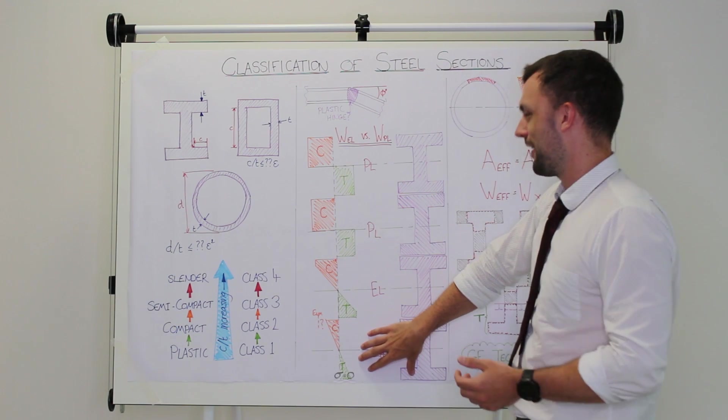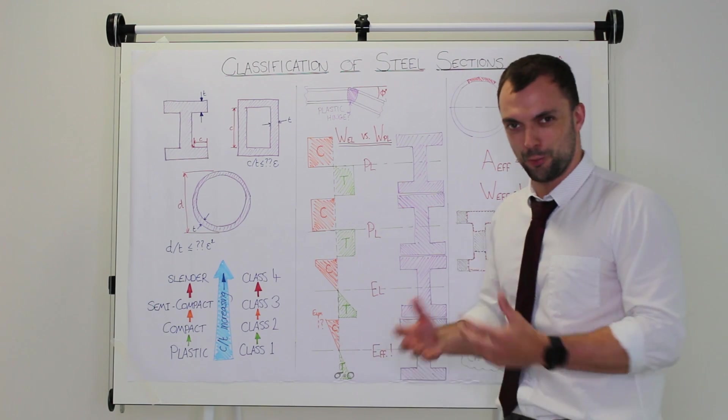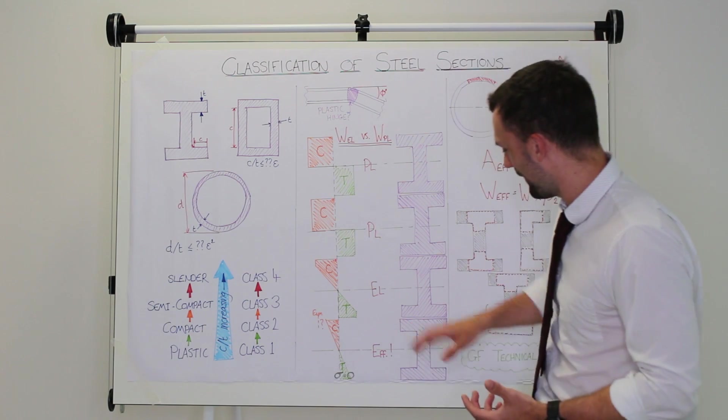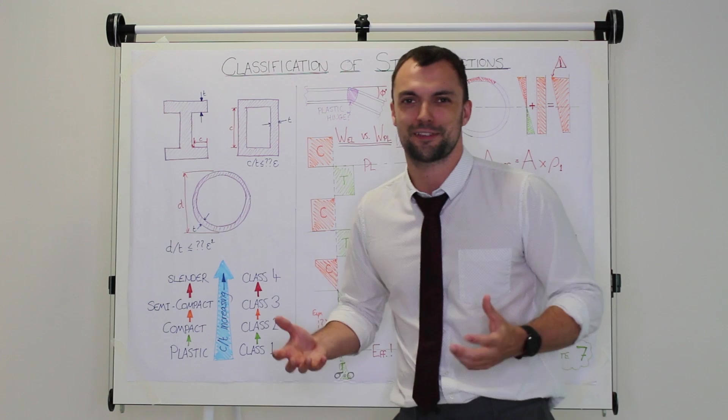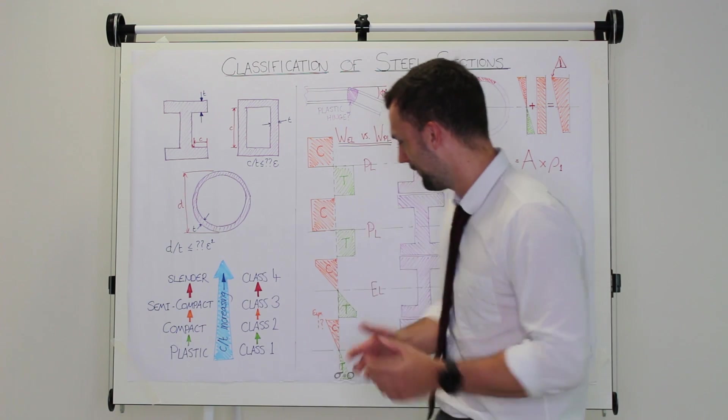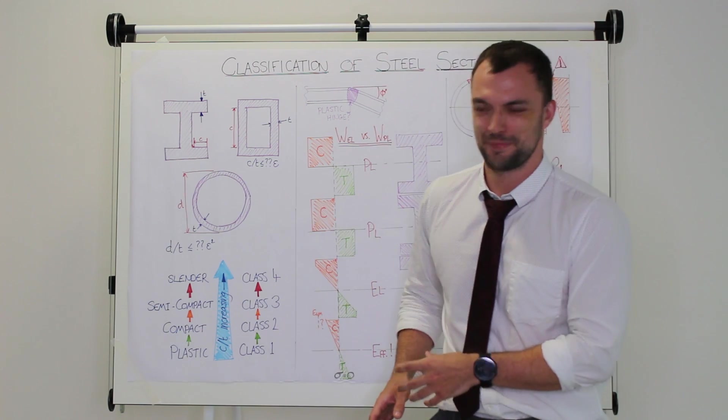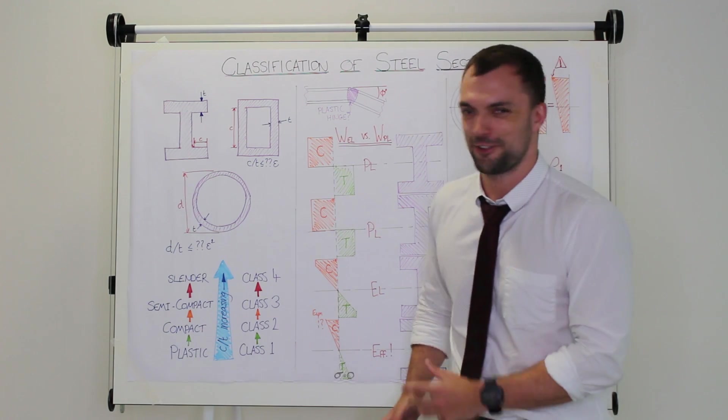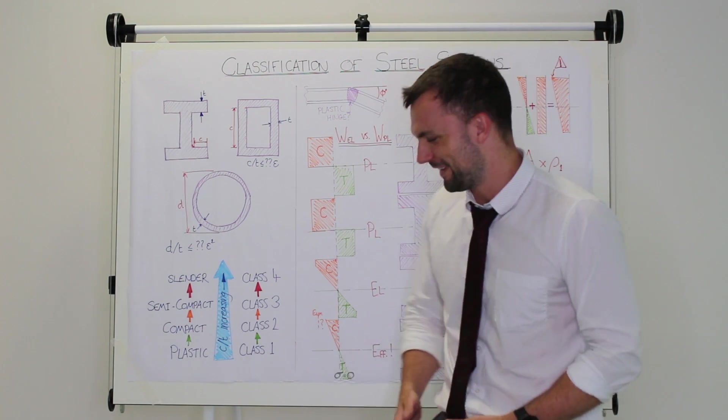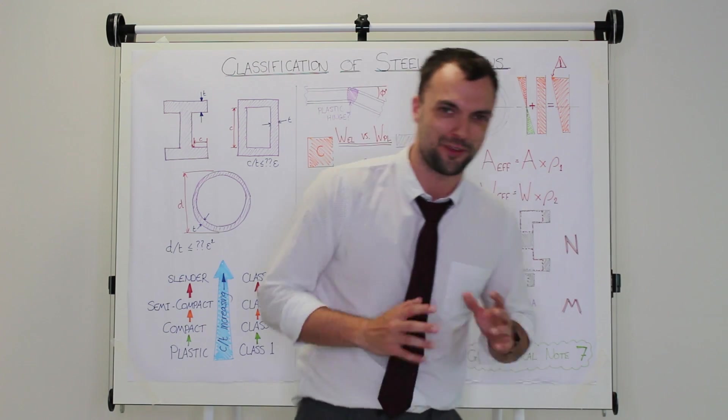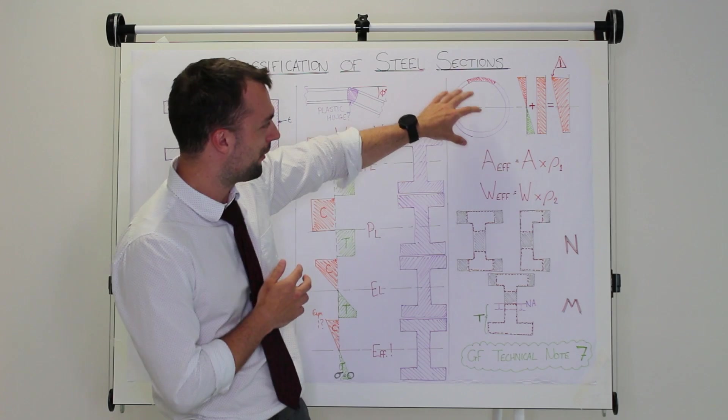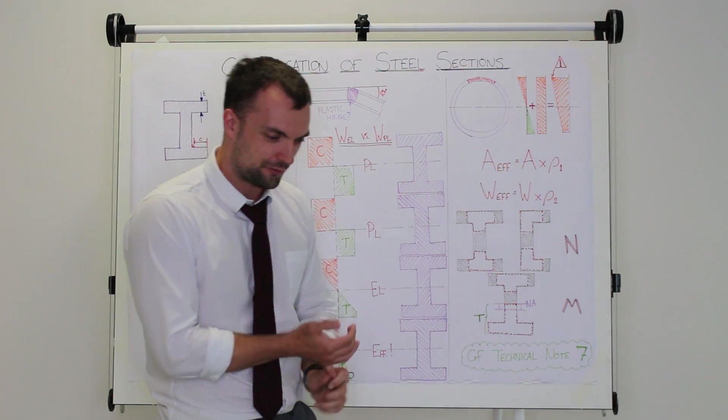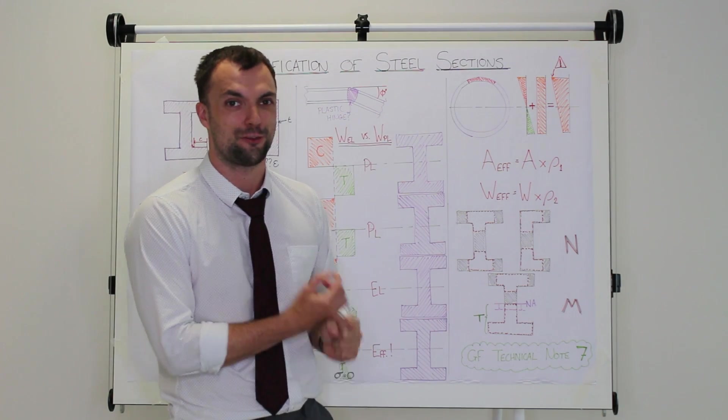Now a class 4 section tends to sit in a little world of its own. A class 4 section is the underdog—it can't even make its full elastic distribution of stress before parts of it start buckling. It's my favorite type of section because you have to apply special rules to it, and extra special rules are always fun when you're doing design. I want to look at our class 4 section, which is our 1220 by 16mm diameter super tube.